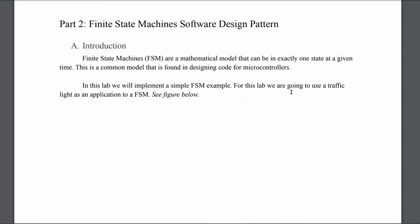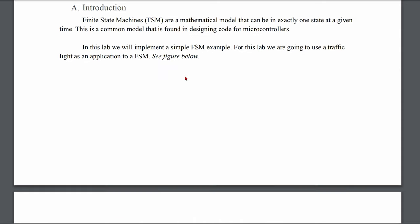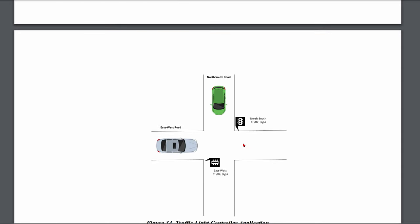For this lab we're going to be using a traffic light application, which is why we chose the green, yellow, and red LEDs. Looking at this figure, we have a north-south road with a traffic light and an east-west road. When our north-south traffic light is green, our east-west road should be red so they don't crash into each other.